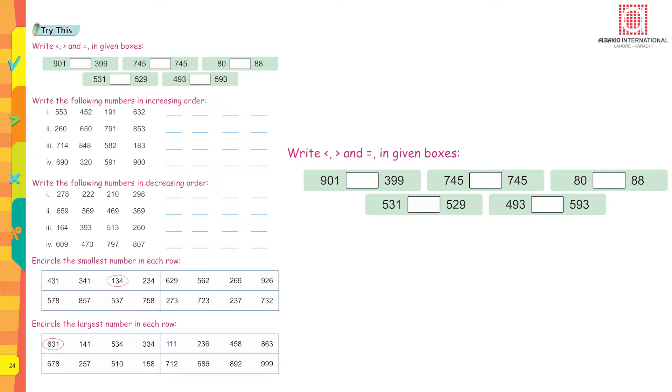Write larger than, smaller than, or equals to in given boxes. 901 is greater than 319, so you are going to put a symbol of greater than. 745 and 745, so 745 equals 745. 80 is smaller than 88. This is how you are going to do the next two sums.